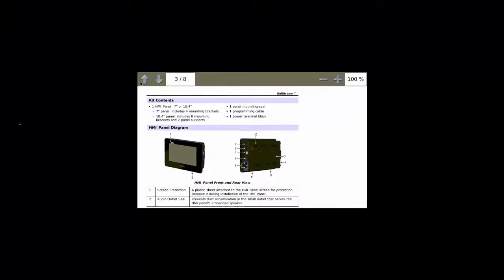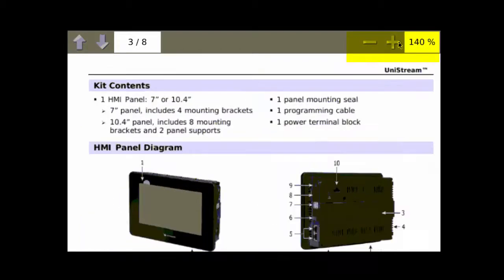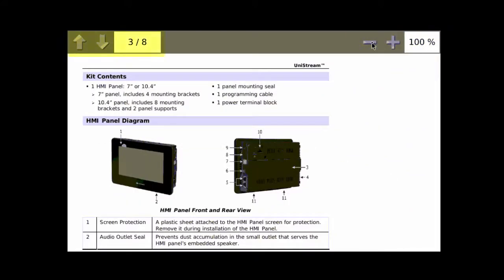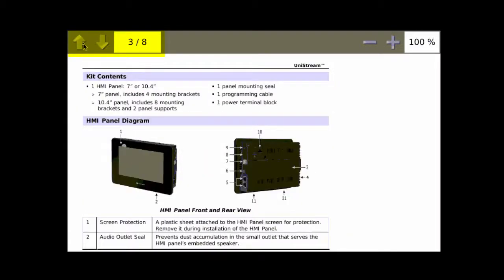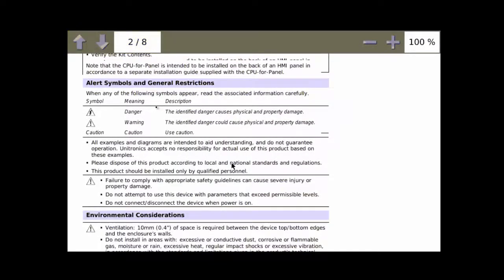Let's look at the PDF as it is displayed on the HMI panel after download. The user can touch the zoom arrows at the top right of the widget in order to adjust the page size. The arrows at the top left enable the user to page through the file. And the user can, of course, scroll down the page by touching the screen.